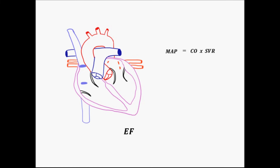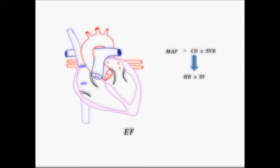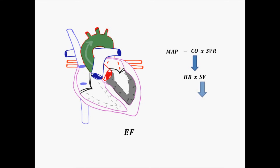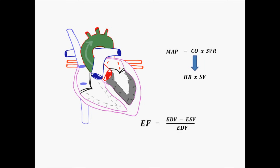Systemic vascular resistance we can't really measure, but we can measure cardiac output because its components are heart rate times stroke volume. Stroke volume is defined as the volume of blood ejected from the left ventricle during systole, and is equal to the end diastolic volume minus the end systolic volume. If we divide this by the end diastolic volume, this gives us the percentage by which the left ventricle has contracted, and we call this the ejection fraction.